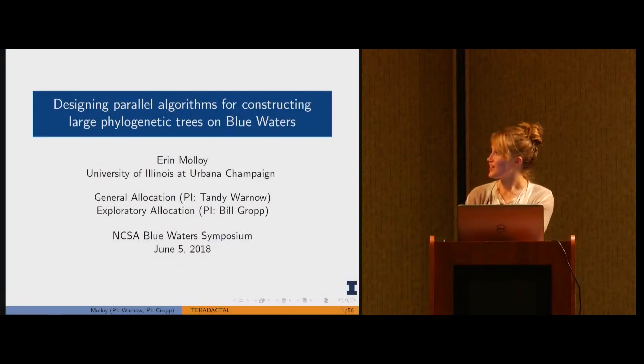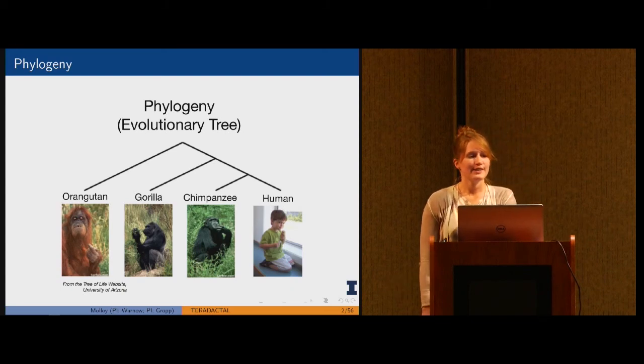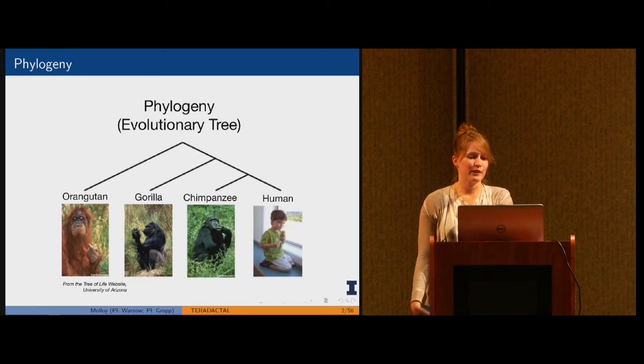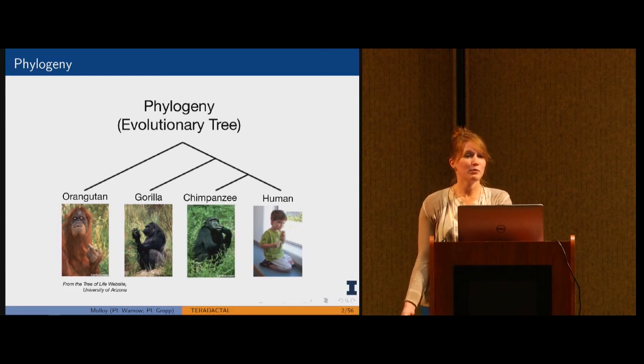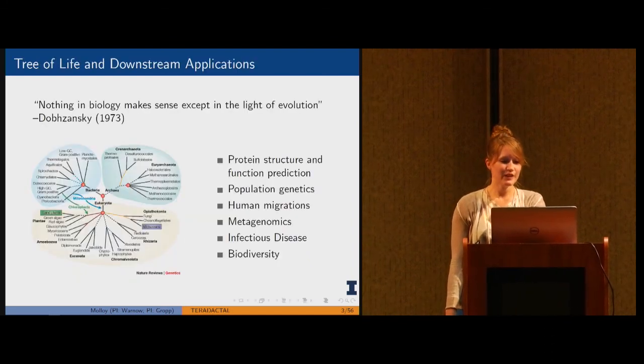Thank you for the introduction. To get started right away, a phylogeny is just an evolutionary tree. In this schematic, we see a picture of a rooted binary tree with four species at the leaves. The schematic indicates that human is more closely related to chimpanzee than to either gorilla or orangutan.